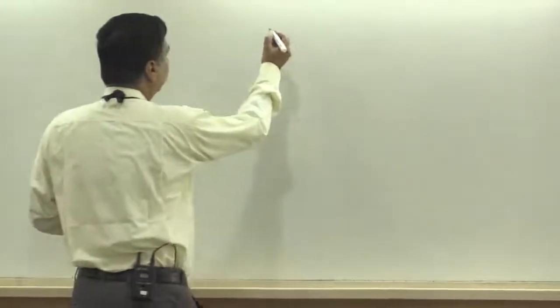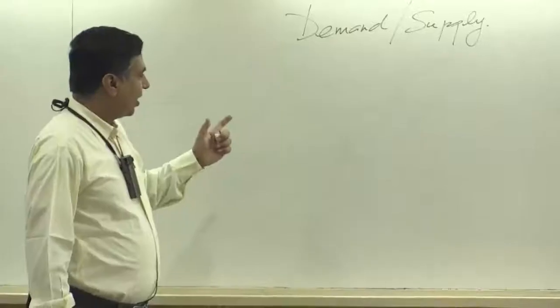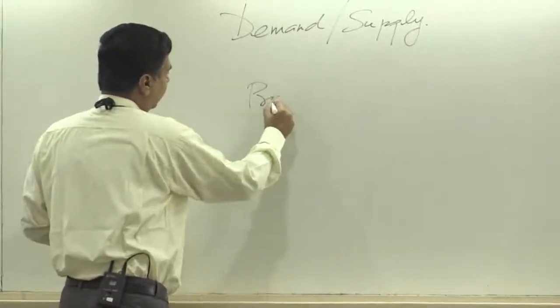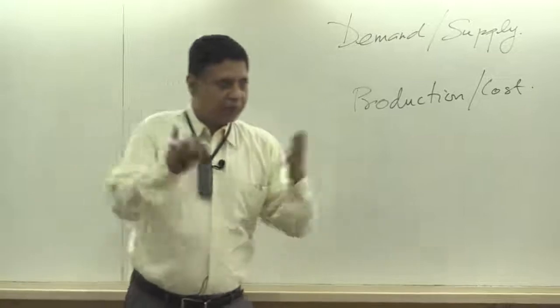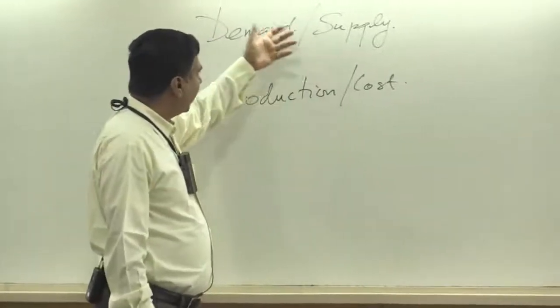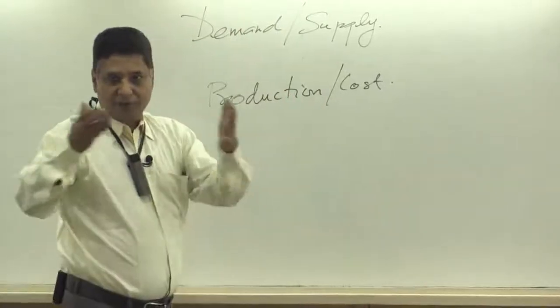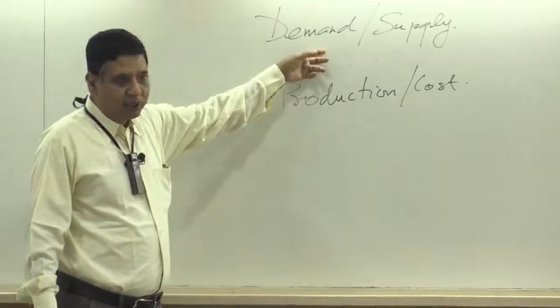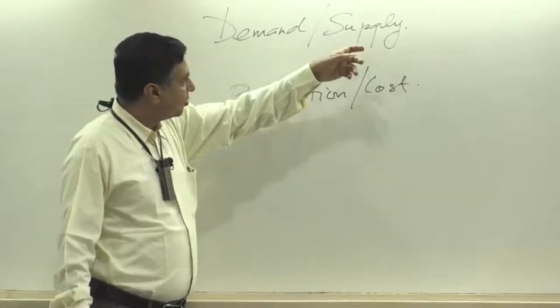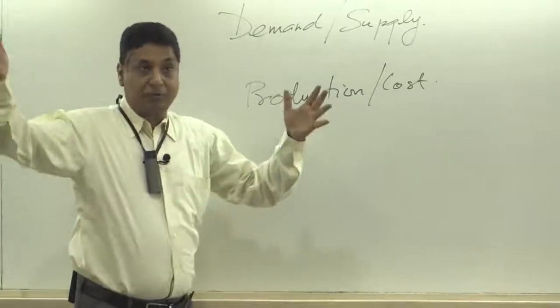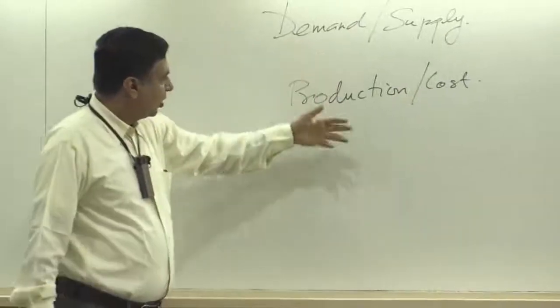We have talked about demand and supply, and then we have talked about production and cost. So demand and supply gives you a general feel for the environment—what the business environment is like. We did a little bit about finding out what goes into people's behavior, so why does the demand curve slope downwards. When it came to supply, we said the supply curve slopes upwards, something you may or may not believe in.